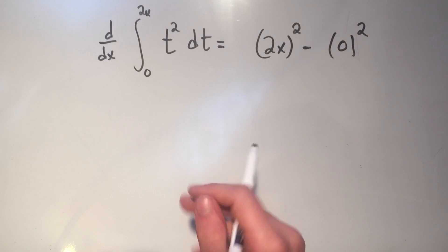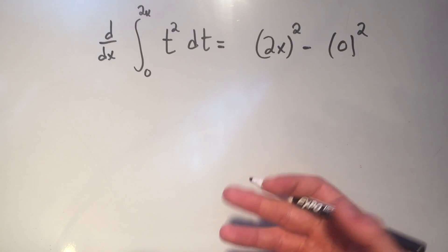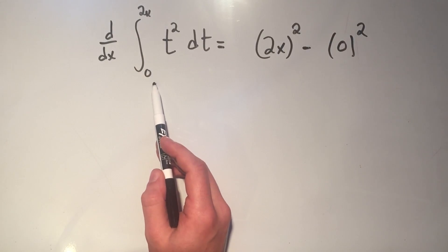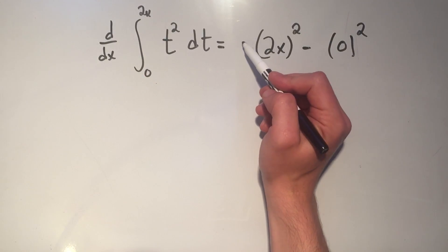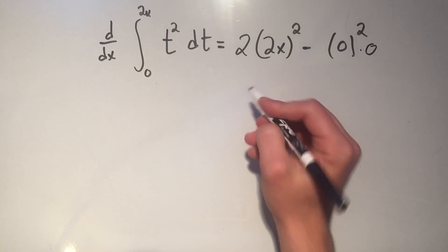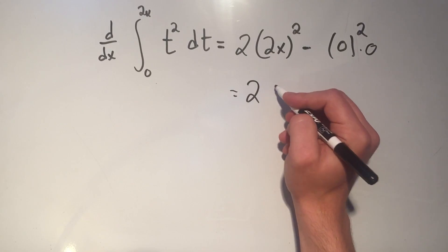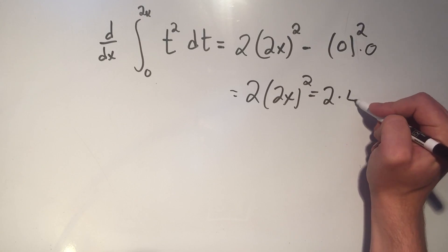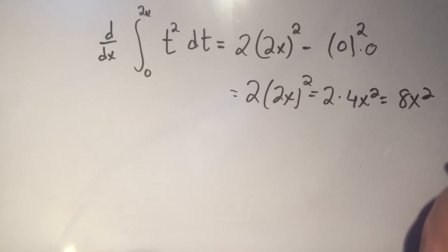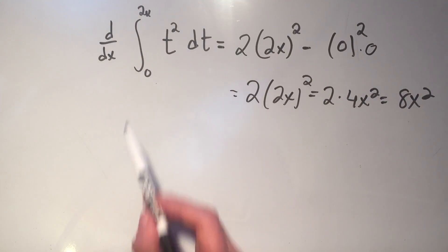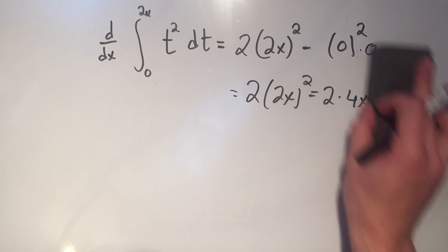But what they don't tell you, or at least not as often, and you have to remember to do this: you need to multiply by the derivatives of these limits. So the derivative of 2x is times 2, and the derivative of 0 is times 0. So the answer here would just be 2 times (2x)² — or if you like, 2 times 4x² which is 8x².